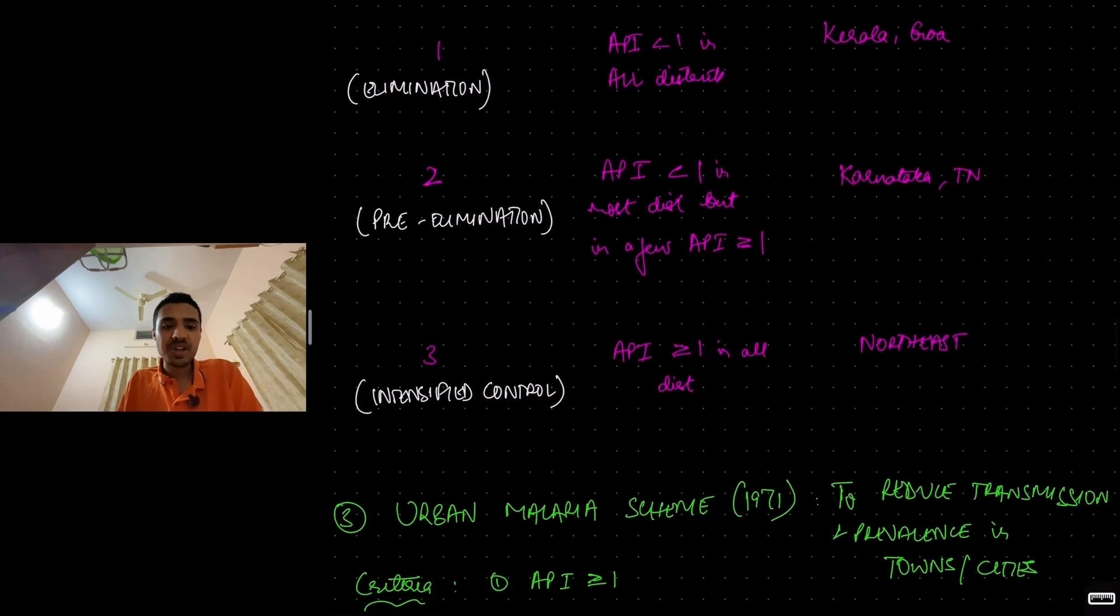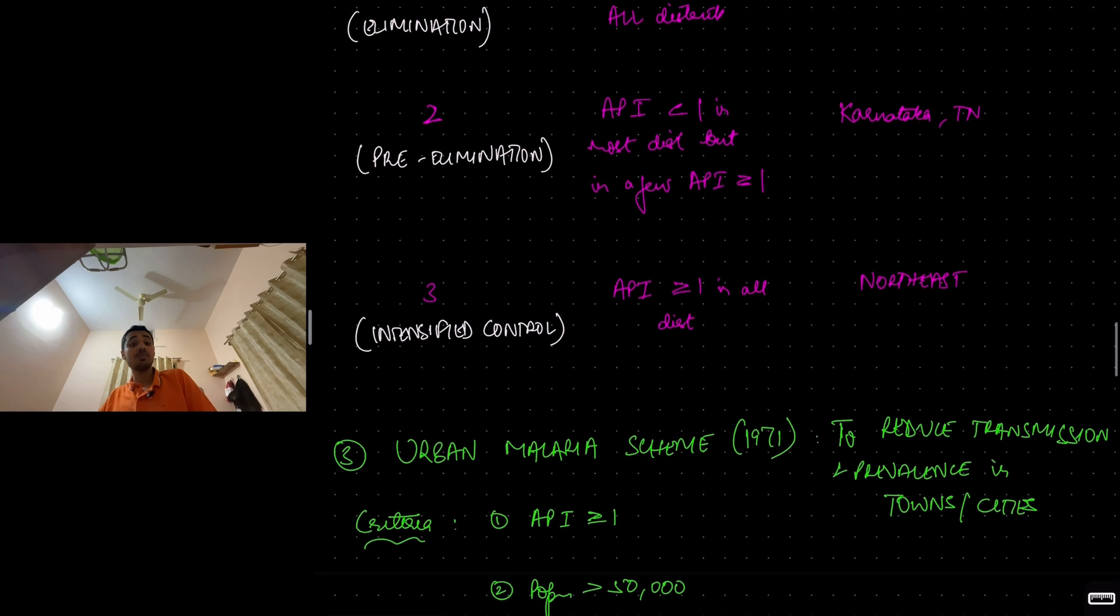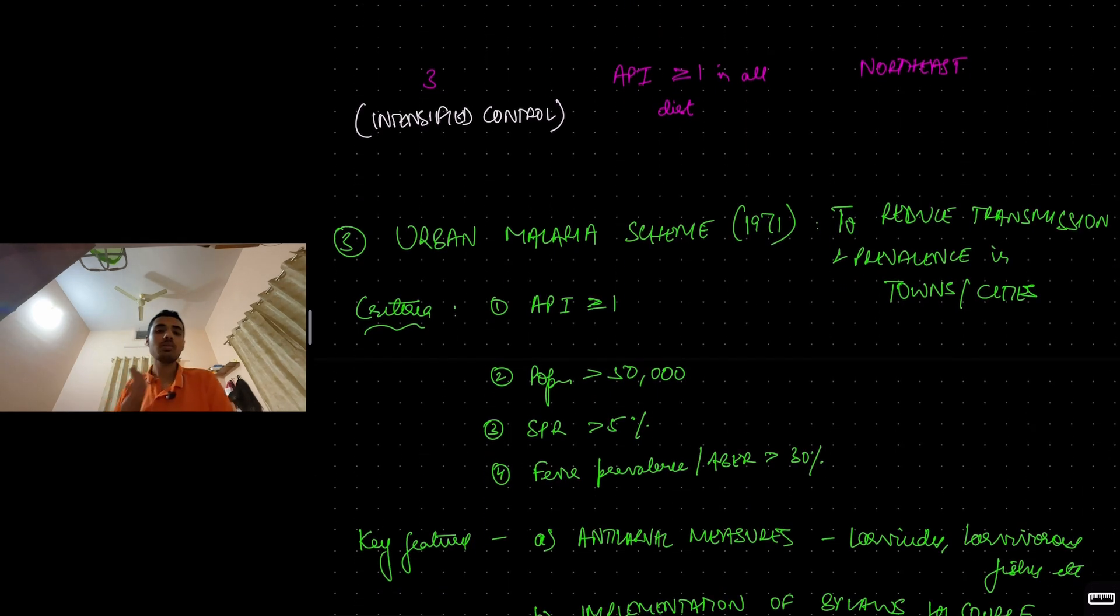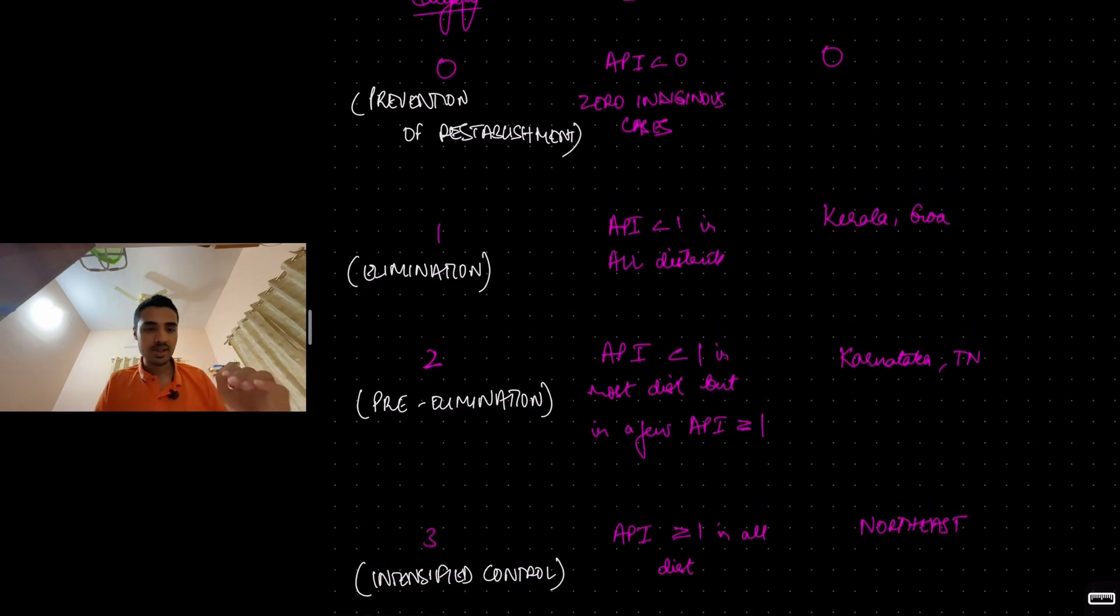Phase 1, elimination phase. In all districts of the state, API is less than 1. It is in the process of elimination. Example, Kerala and Goa. Category 2, pre-elimination phase. In most districts, API is less than 1. But in a few districts here and there, API is more than or equal to 1. Example, Karnataka and Tamil Nadu. Third one, intensified control. Here API is more than 1 in all districts. This is the true endemic regions of malaria. Here, malaria is very very high. API is more than 1 in all districts. So here you require intensified control measures. Example, Northeast states, Mizoram, Meghalaya, Tripura, Nagaland, all those states.